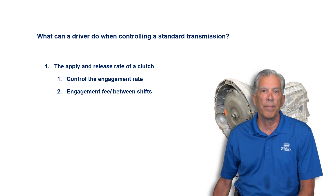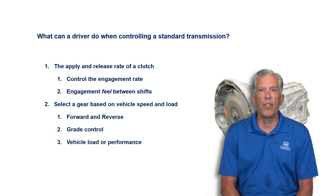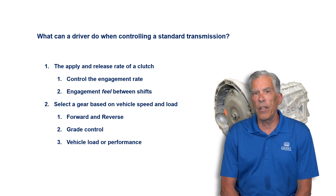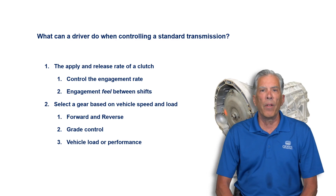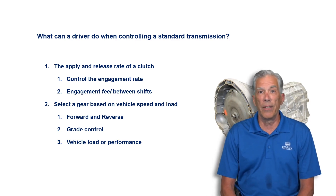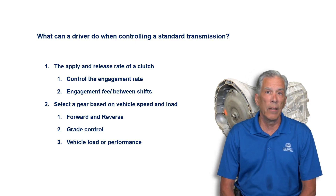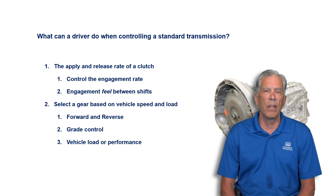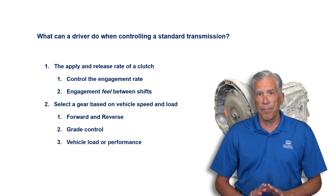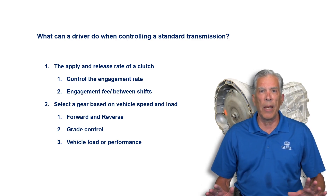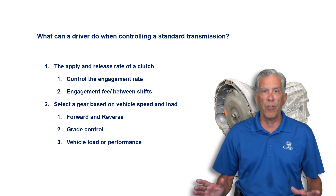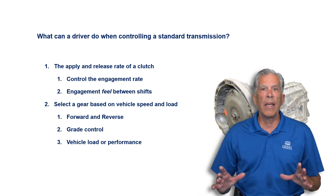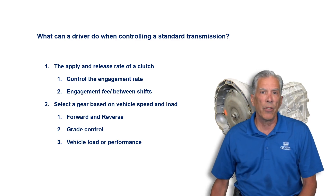They can control the engagement rate and the feel between shifts by the rate that they push in and let out the clutch pedal. The second thing they can do is determine which gear the transmission is going to be in — are we moving forward or are we moving in reverse? Third is grade control: they're going to operate the transmission differently if they're going up a grade versus level ground, or going down a grade. They can also vary their shifting based on load — whether driving alone or with five passengers, or in a truck that's empty versus one with half a ton of bricks in the bed.